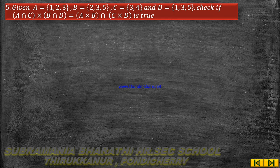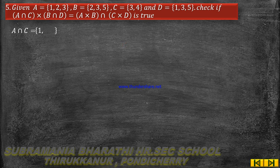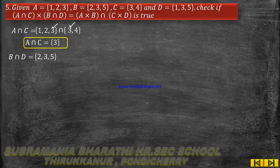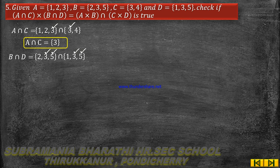Now you are going to check this. Write down the elements of sets A, B, C, and D. Then find A∩C: elements of A = {1,2,3} intersection C = {3,4}, so A∩C = {3}. Next, find B∩D: elements of B = {2,3,5} intersection elements of D = {1,3,5}.